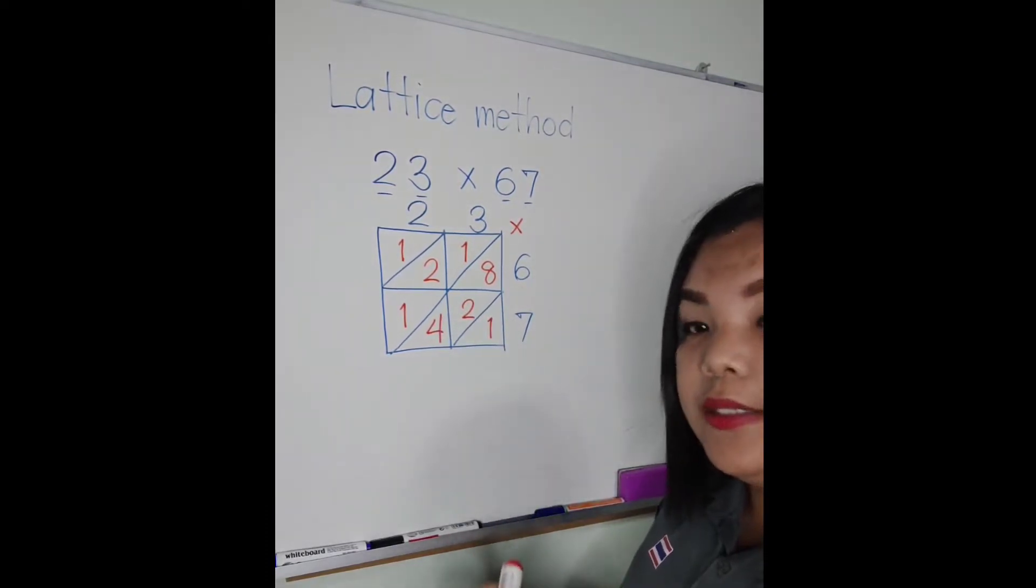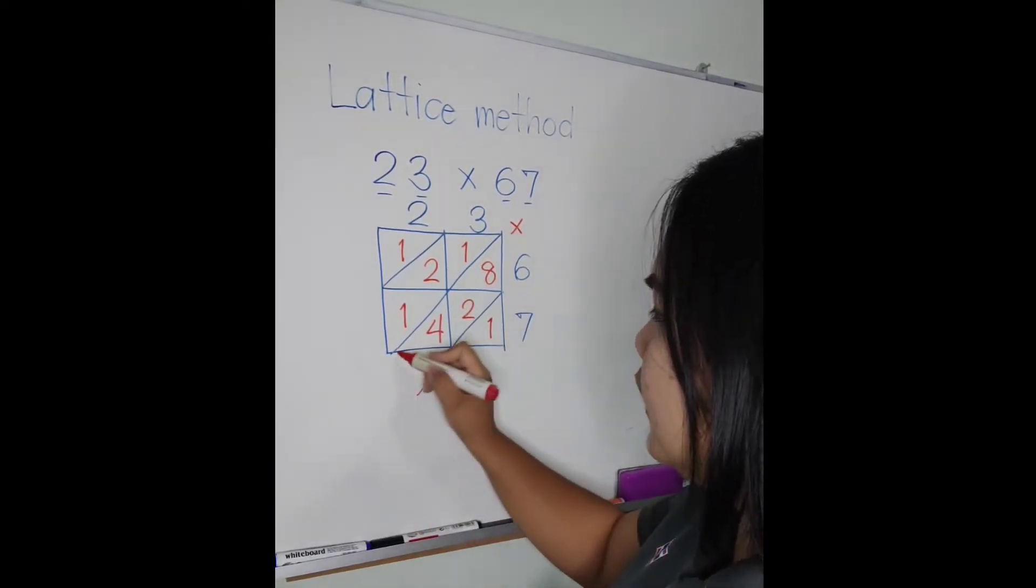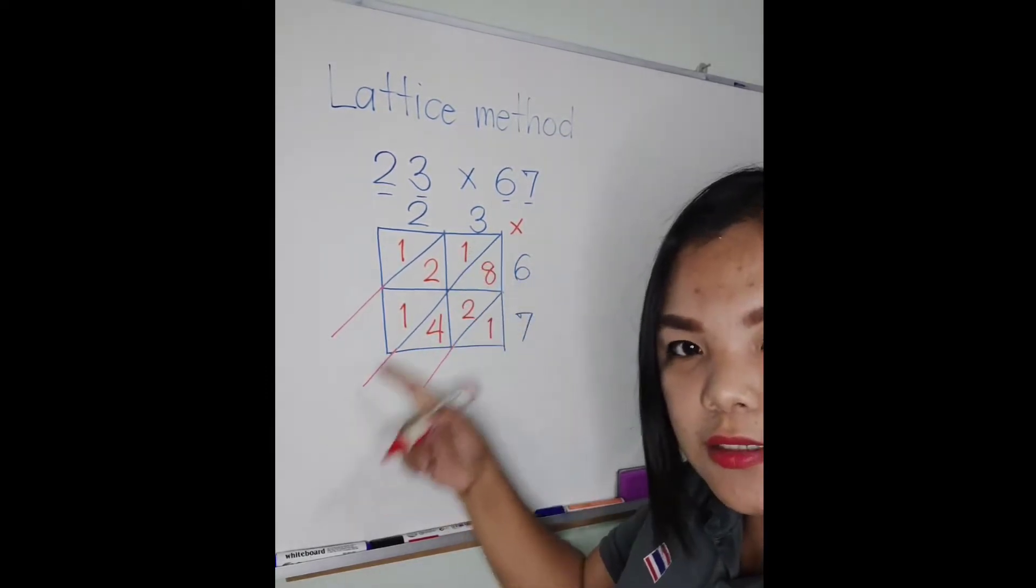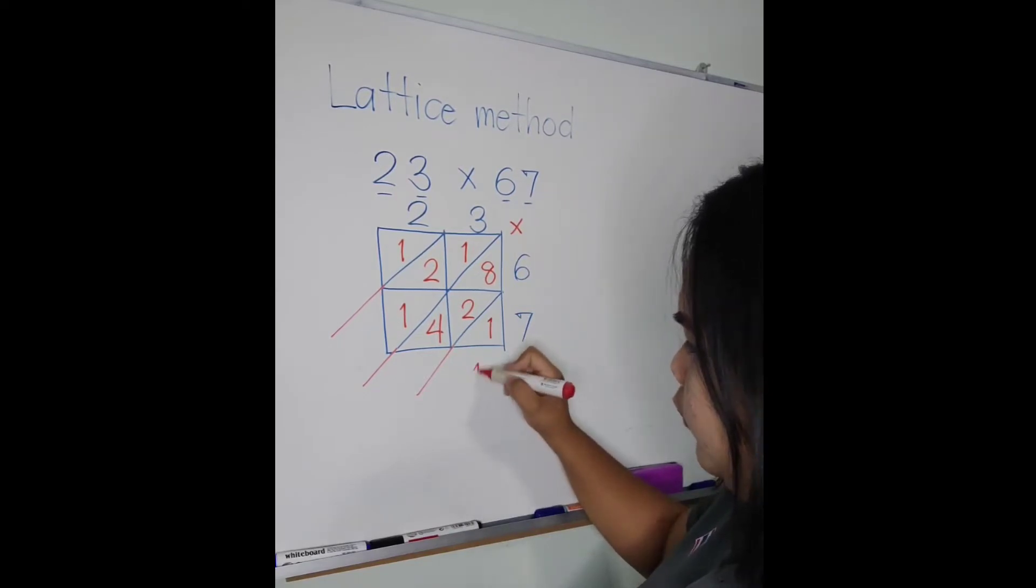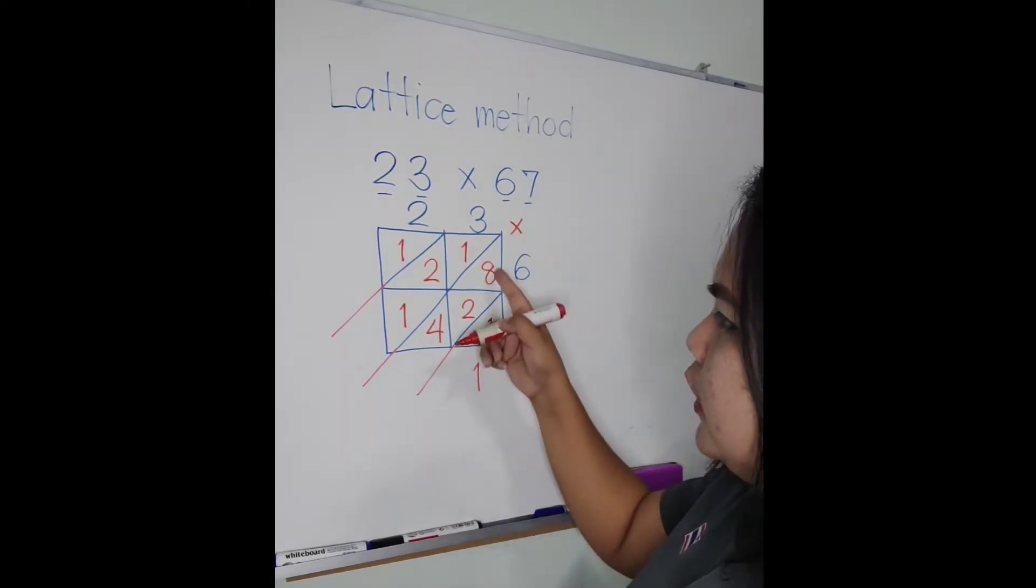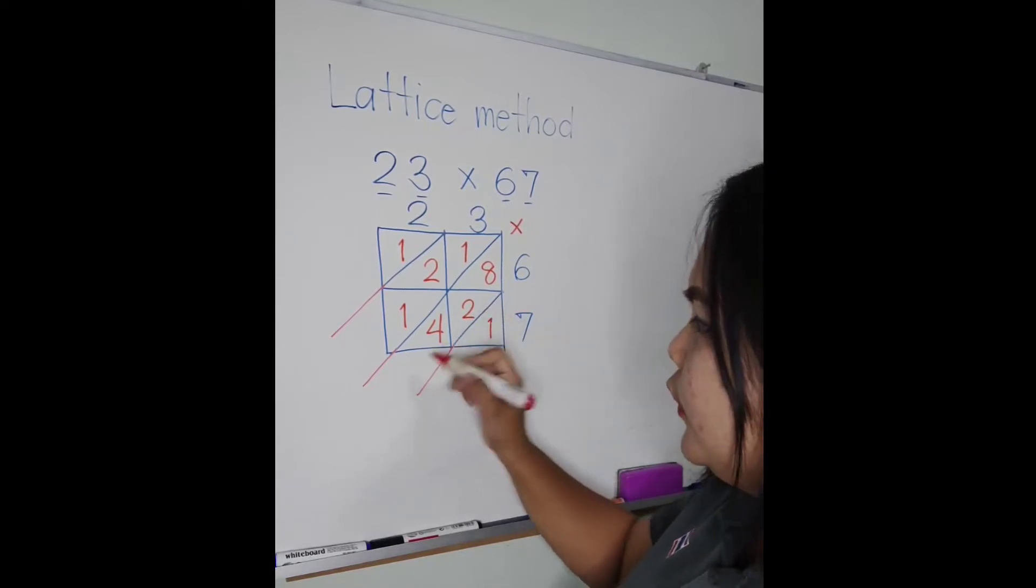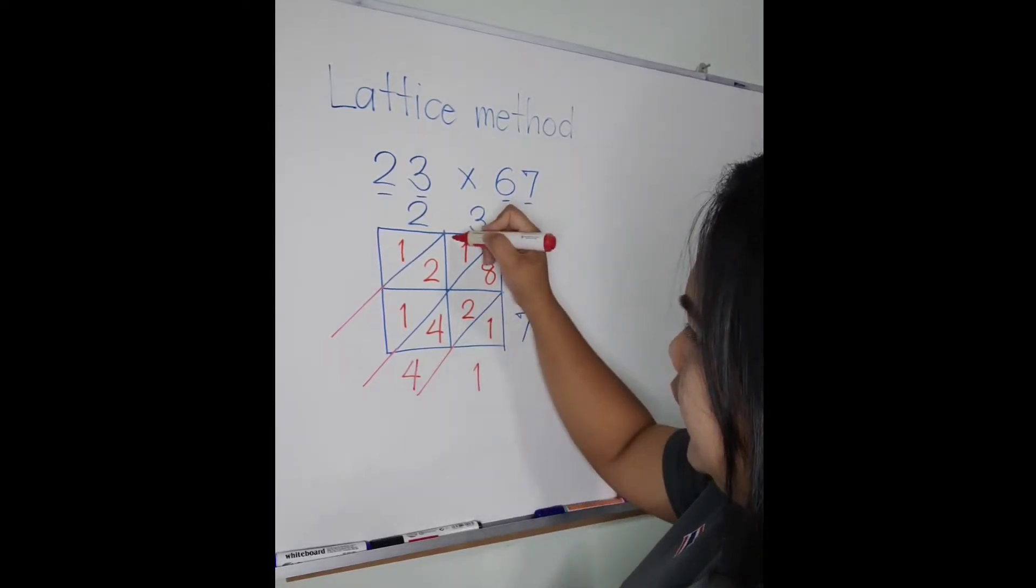Okay, next step you are going to add the numbers by slanting position. So this one, bring the 1, 2. 8 plus 2 is 10, 10 plus 4 is 14, carry 1.